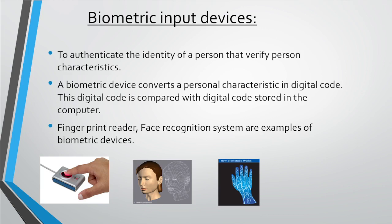Next is biometric input devices. Biometric is a technology to authenticate the identity of a person by verifying their physical characteristics. Biometric is a methodology in which we use the physical characteristics of a person to identify that person. A biometric device converts personal characteristics into digital code. This digital code is compared with the digital code stored in the computer. Some examples of biometric devices are fingerprint reader and face recognition system.